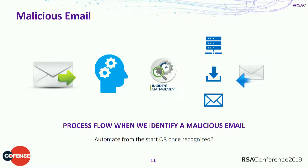After following your incident response process and looking at the email, you determine whether it's malicious. If it is malicious, then what do you do? You need to block the IP, send signatures down to your antivirus so endpoints can detect if somebody else gets it and clicks on it, and maybe send it off to your mail team to quarantine those messages — because if something bad comes in, you don't want the user interacting with it.